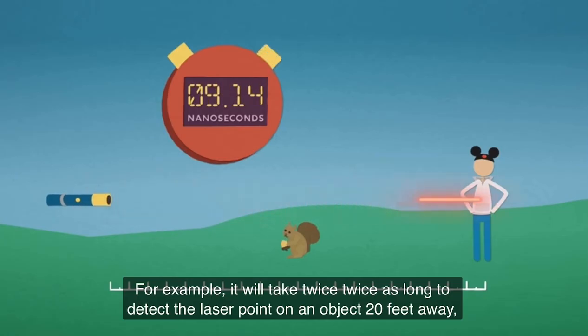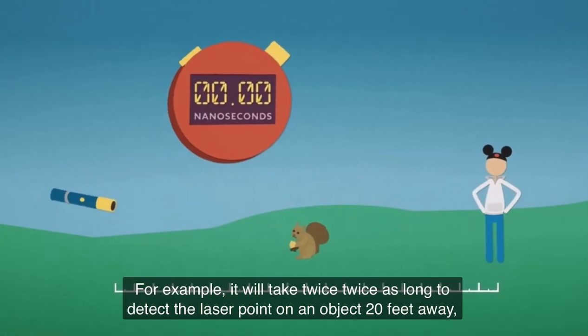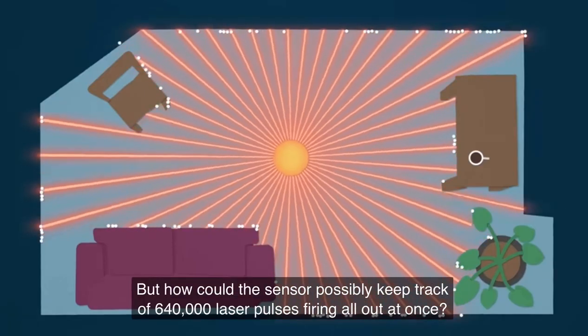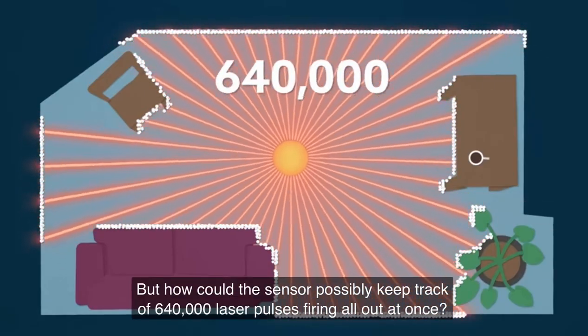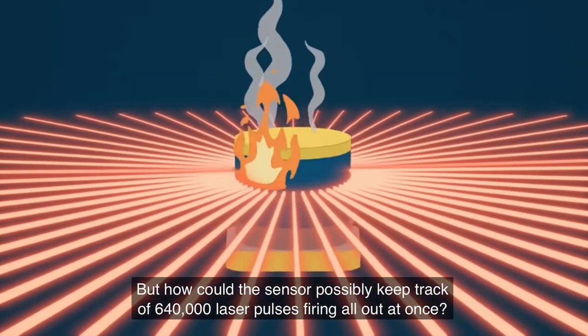For example, it will take twice as long to detect the laser point on an object that's 20 feet away, as opposed to an object that's 10 feet away. But how could the sensor possibly keep track of 640,000 laser pulses firing all out at once?